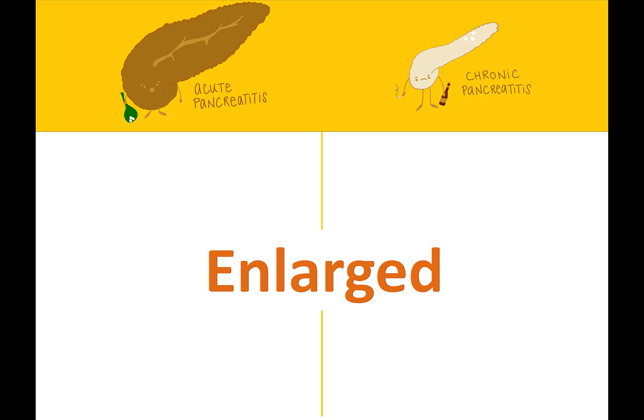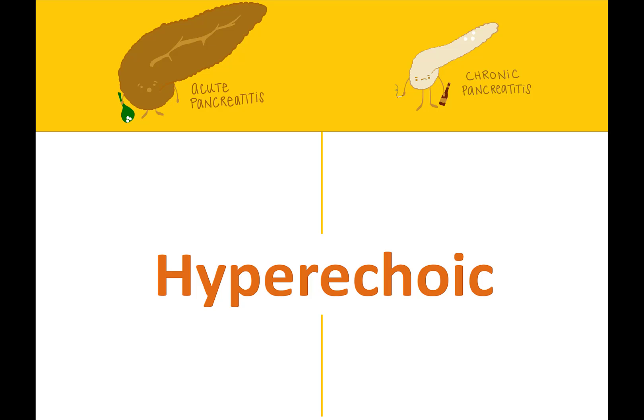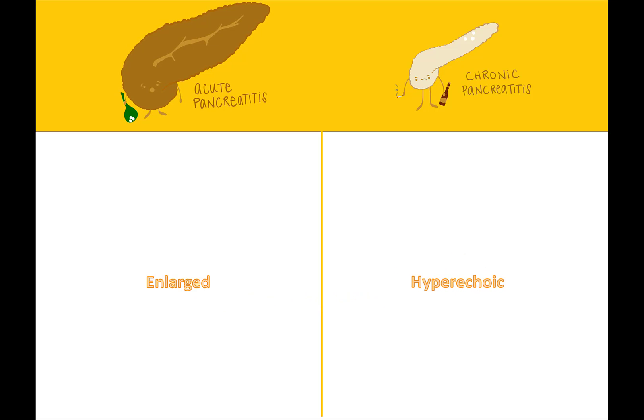What is an enlarged pancreas commonly seen with? Acute pancreatitis. Acute processes often cause an organ to become edematous or enlarged. Which pancreatitis will make the pancreas appear hyperechoic? Chronic pancreatitis. Calcifications and fibrotic changes can make the pancreas brighter.